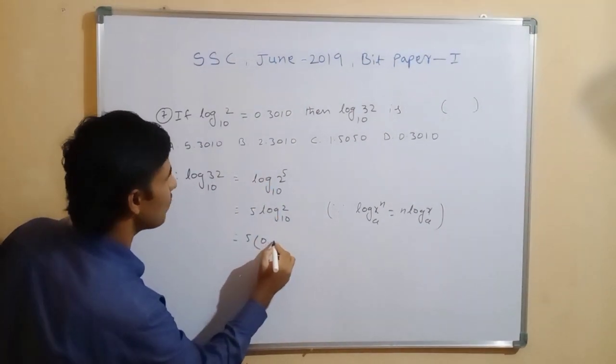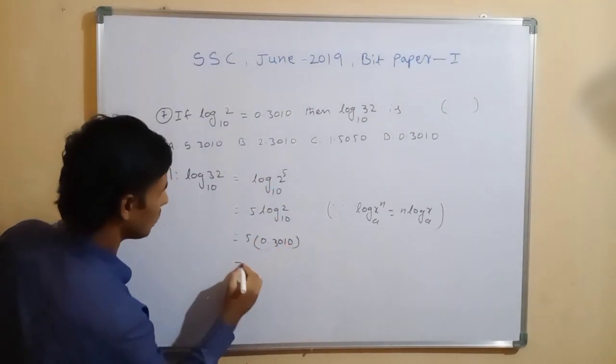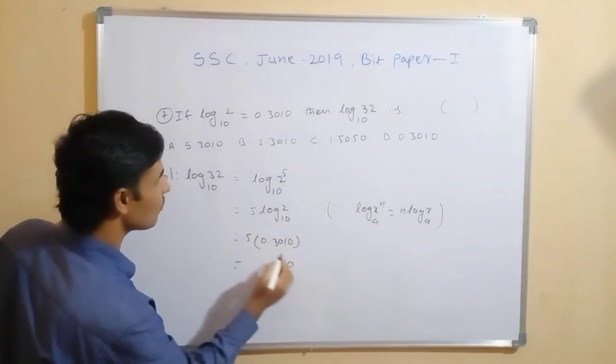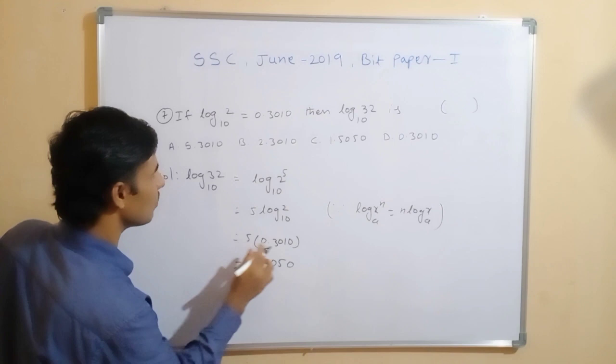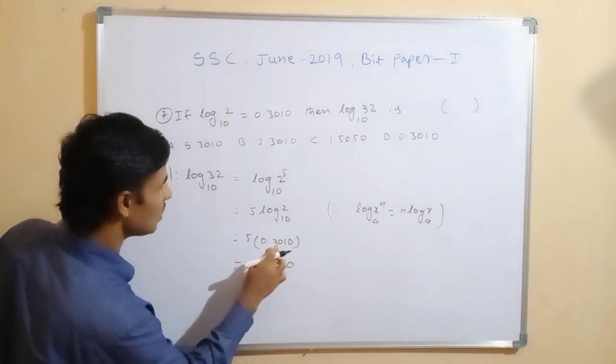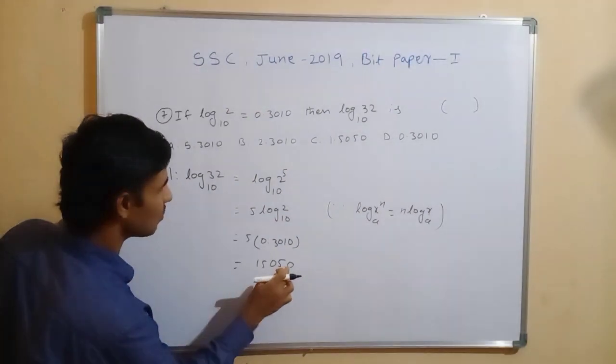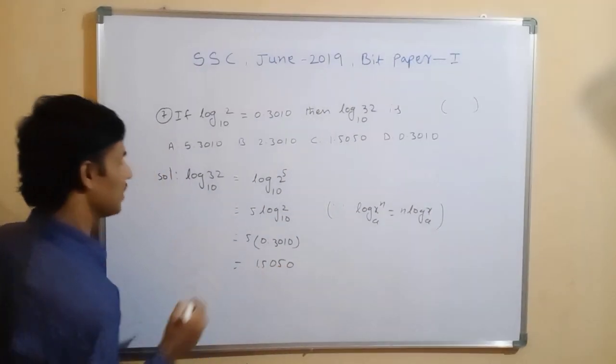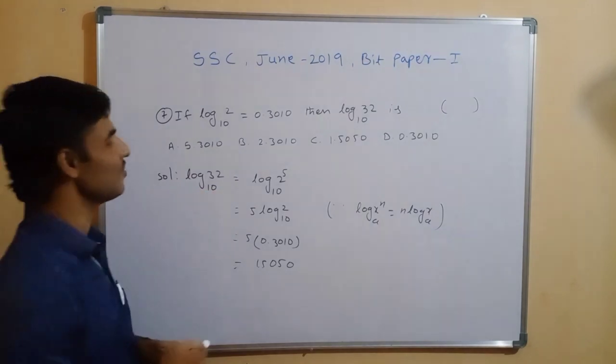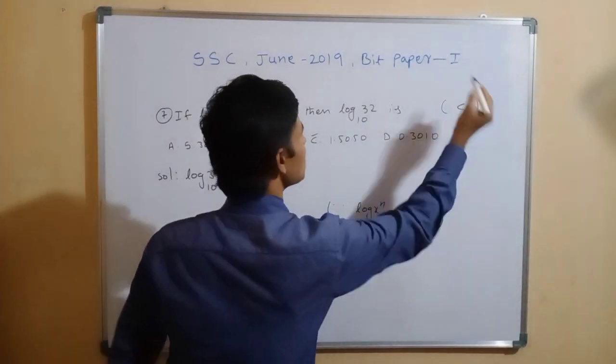0.3010, so you multiply with 5. 5 times 0 is 0, 5 times 1 is 5, 5 times 0 is 0, 5 times 3 is 15. So with 4 numbers after the decimal point: 1.5050. Where is the answer? C, so answer C is the correct one.